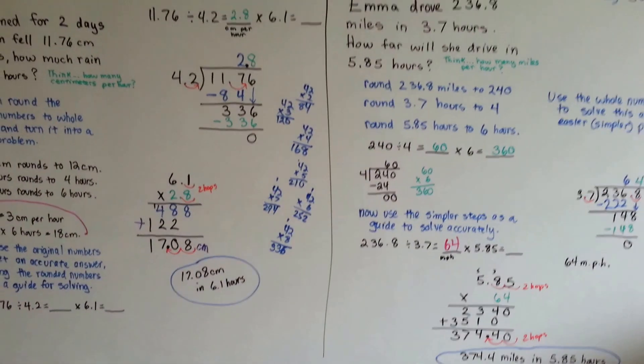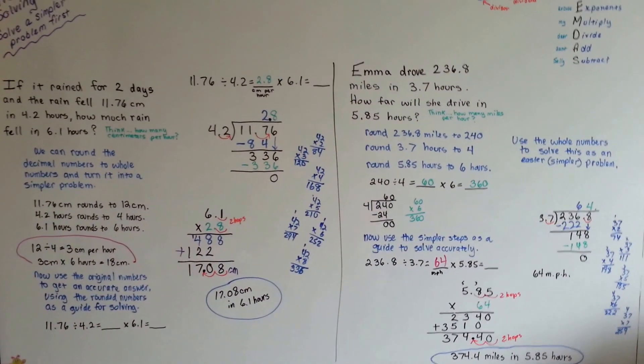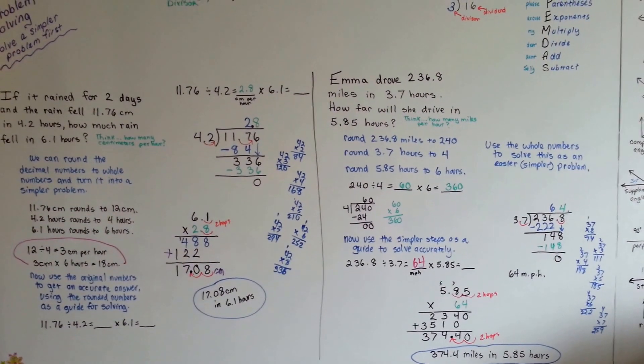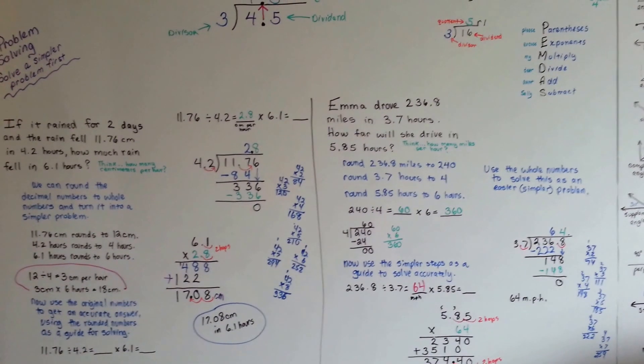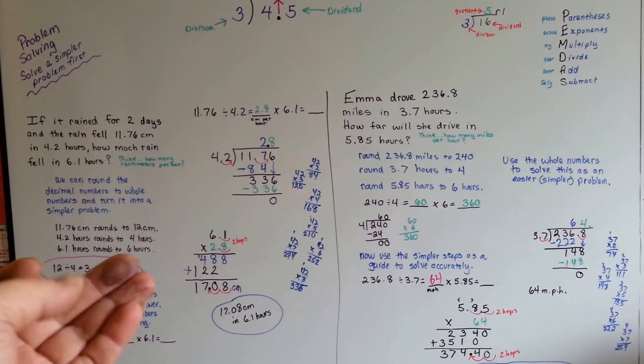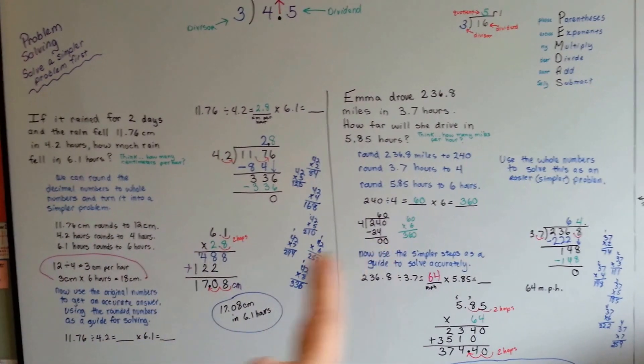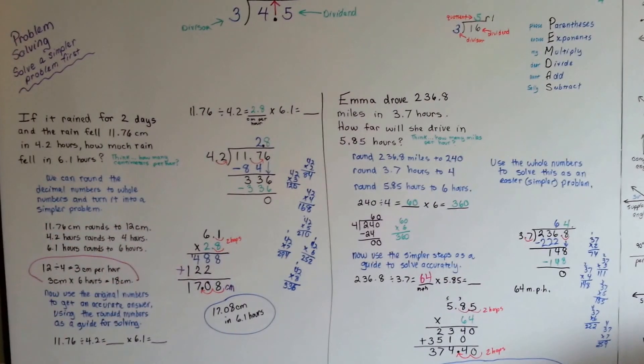If a word problem is really confusing, just round the numbers so that it's simpler and that your brain can see the clear path to solving it. And don't let the numbers intimidate you, because now you turn them into easier numbers. Just turn it into easier numbers and then use it as a guide to solve it accurately.